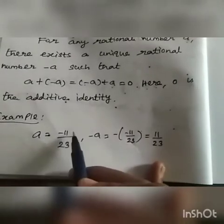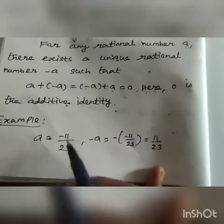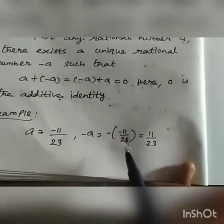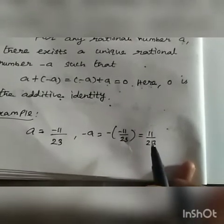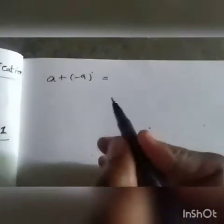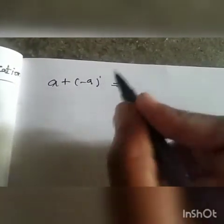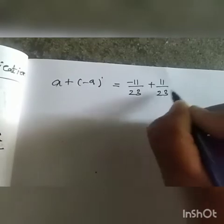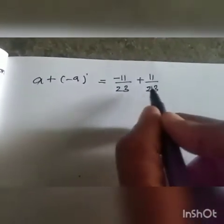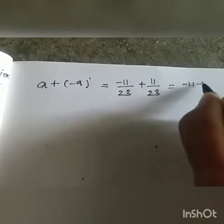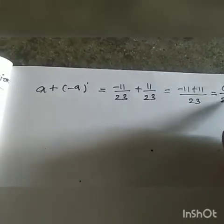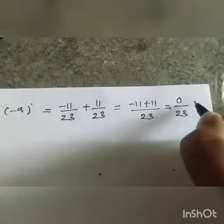Let us see the example. We take A = -11/23. So -A = -(-11/23) = +11/23. Now we apply A + (-A): the value of A is -11/23. Since the denominators are the same, we get (-11 + 11)/23 = 0/23 = 0.